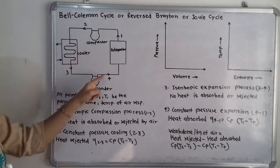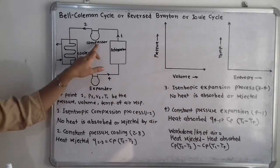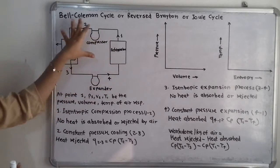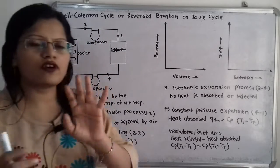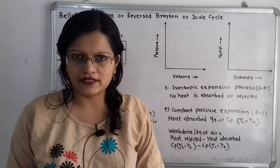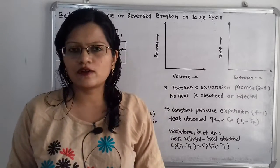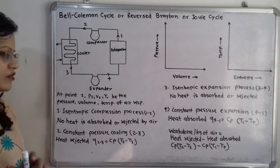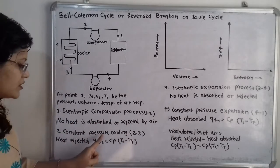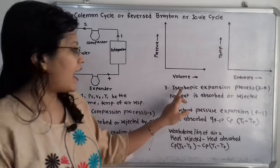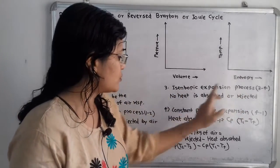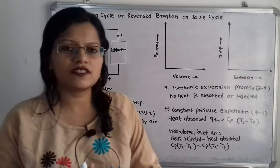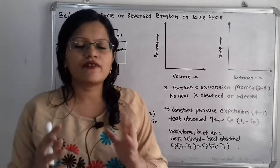We are going to understand the four processes with the help of a diagram. In this diagram there is a compressor, cooler, expander, and refrigerator. Within these four equipments the four processes take place: isentropic compression, constant pressure cooling, isentropic expansion, and constant pressure expansion.